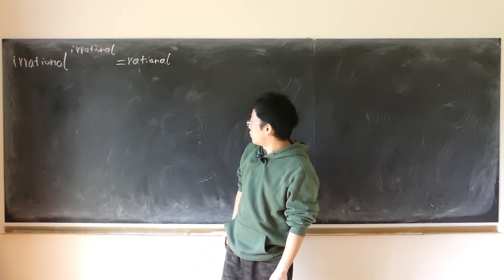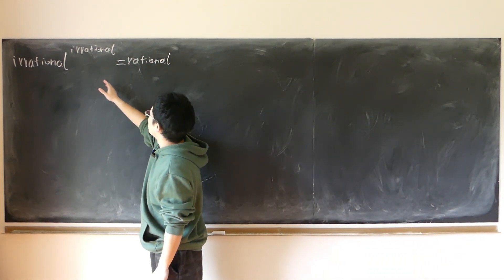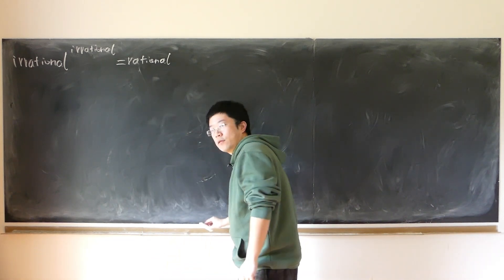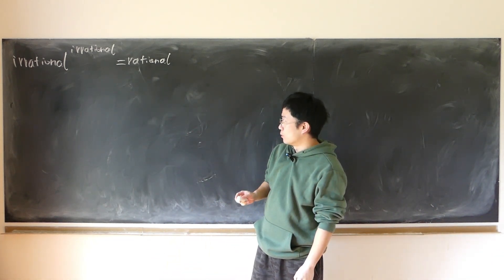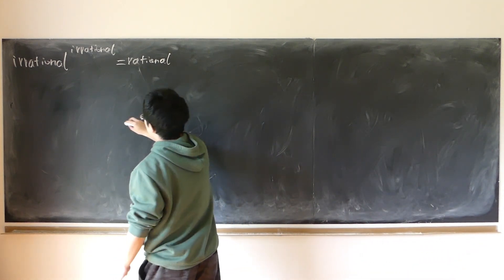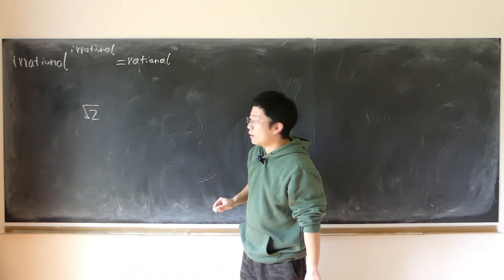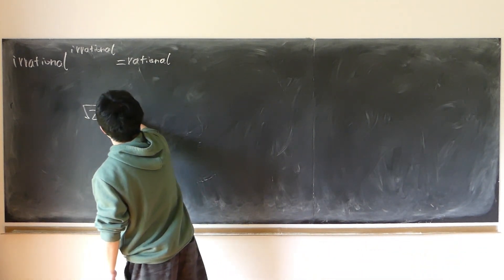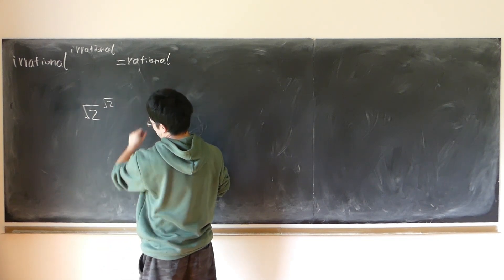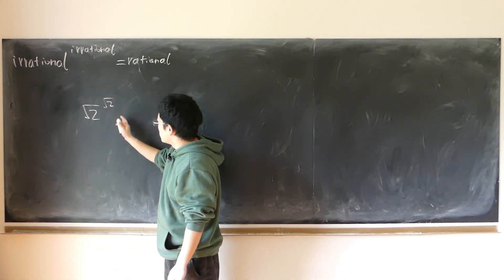Is it possible to have an irrational number raised to the power of some irrational number give us a rational number? The first well-known irrational number we know is square root of 2. So let's look at the number square root of 2 raised to the power of square root of 2 — both of them are irrational.